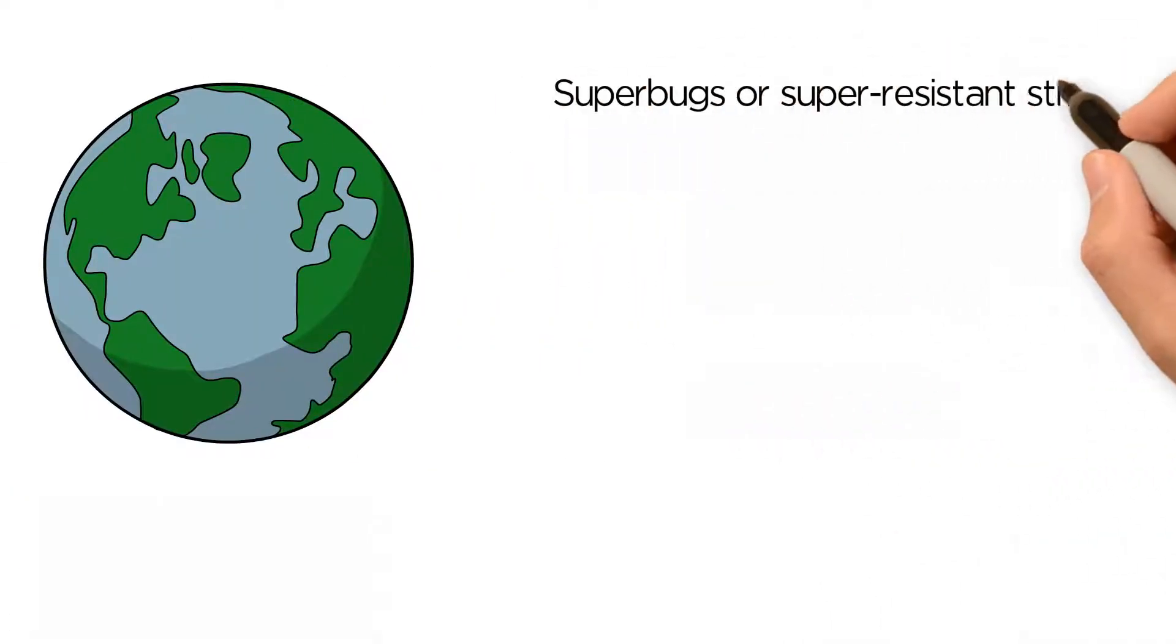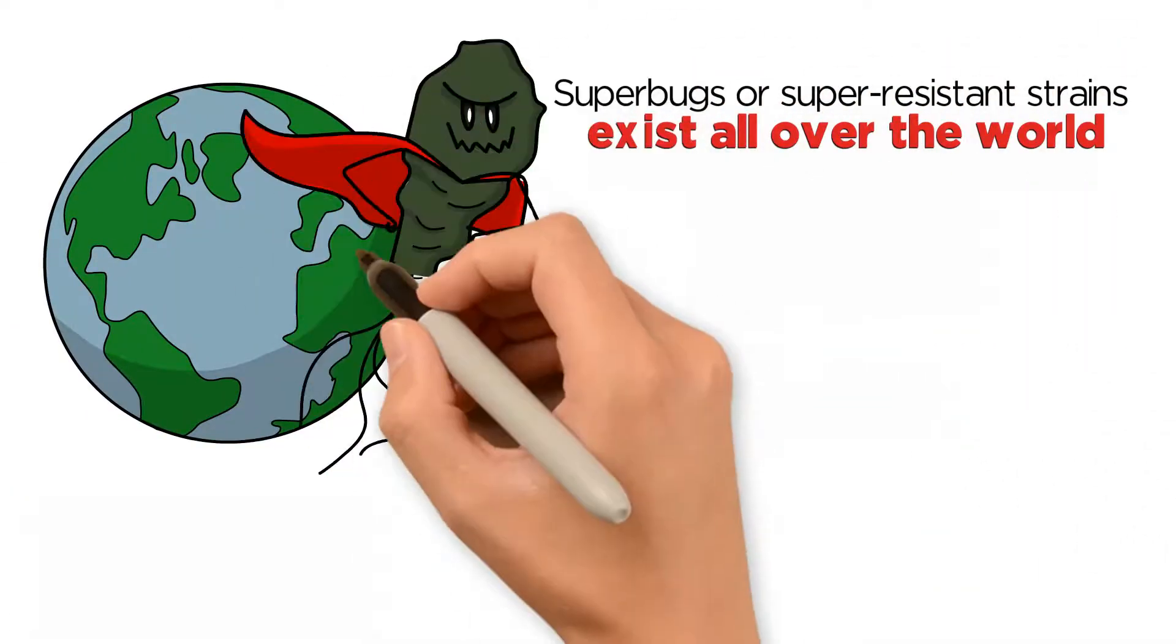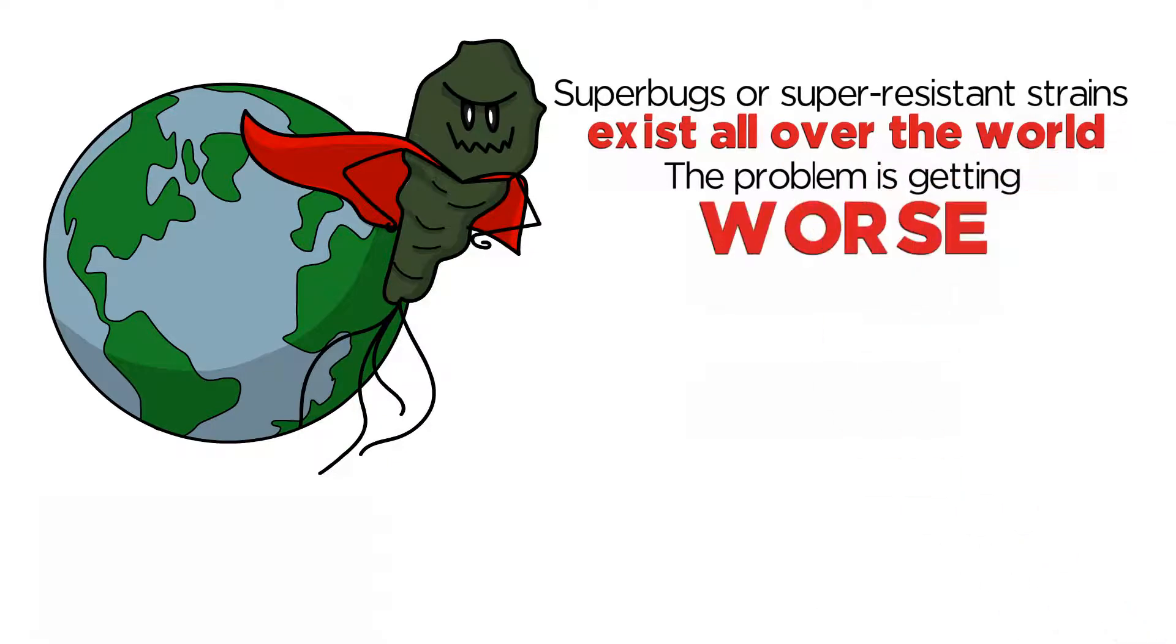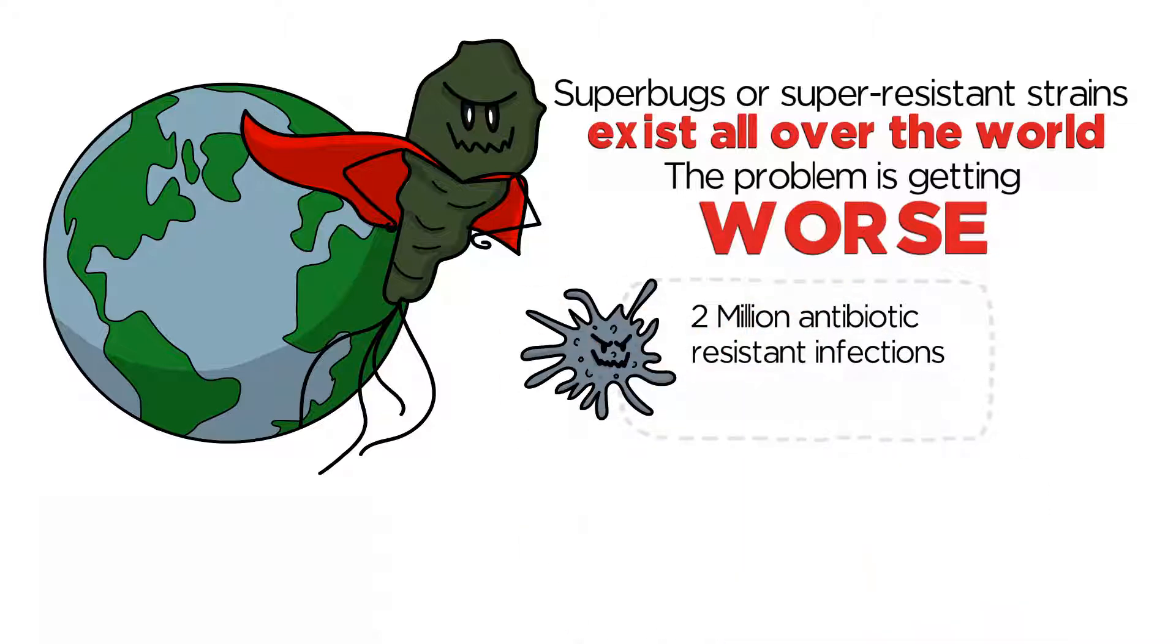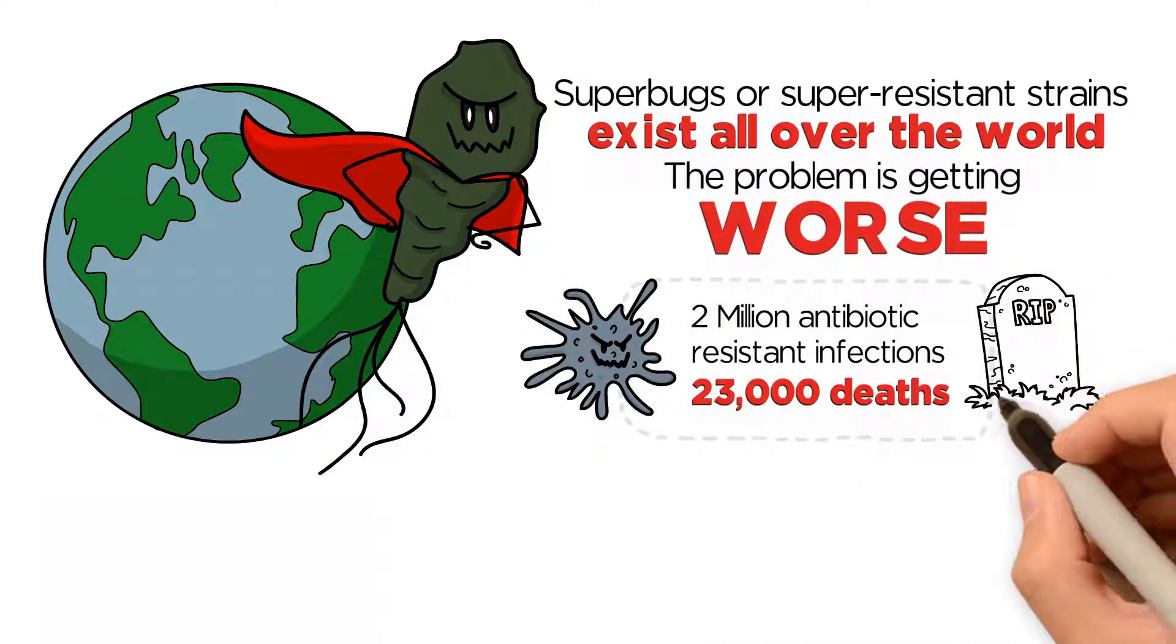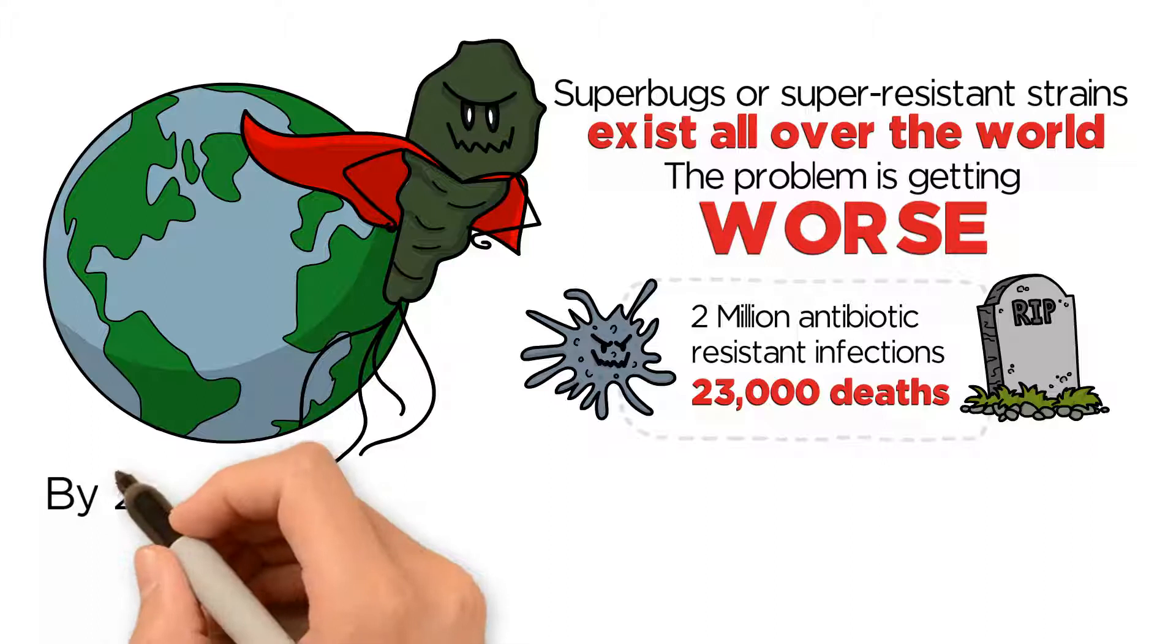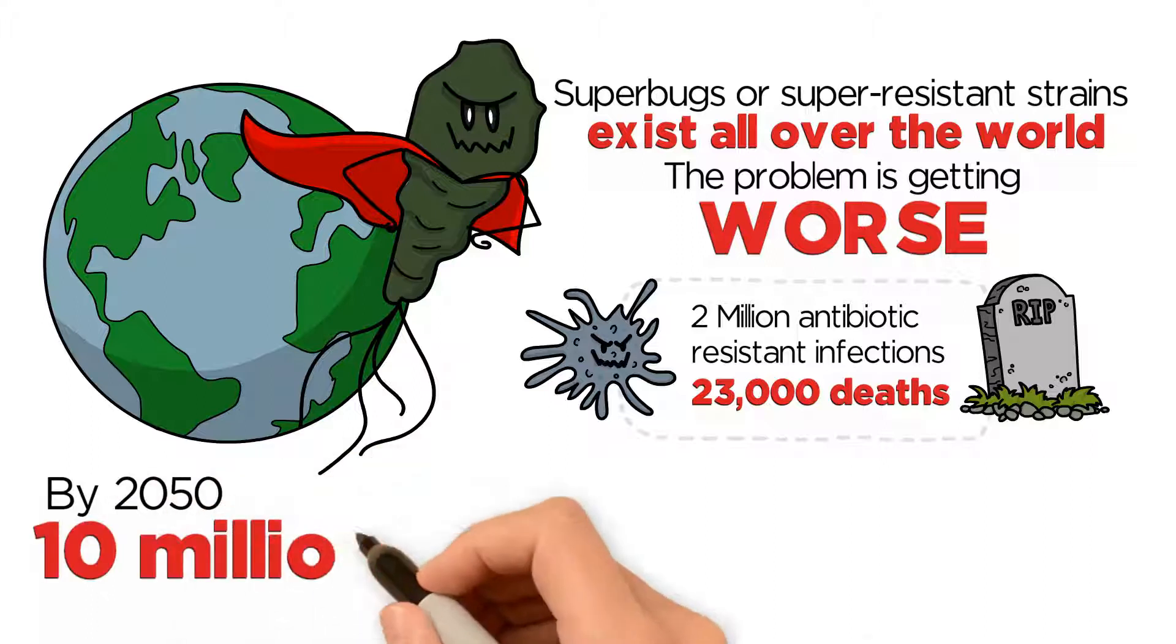Superbugs, or super-resistant strains, exist all over the world. And the problem is getting worse. Currently, there are 2 million antibiotic-resistant infections in the U.S. with 23,000 deaths due to these infections. By the year 2050, 10 million will have died due to infection.